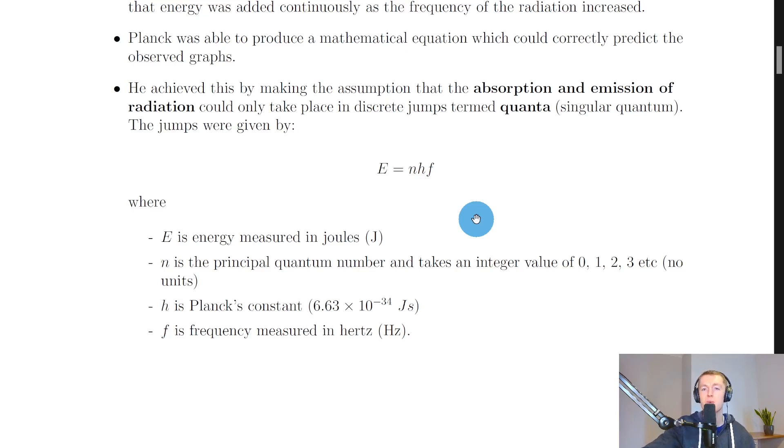We've seen that classical physics which was used by Rayleigh and Jeans to predict the blackbody radiation curve failed to give the correct shape because it assumed that energy was added continuously, whereas Planck used quantum physics to assume that energy was not added continuously but was added as packets of energy or multiples of a certain energy value depending on the frequency.